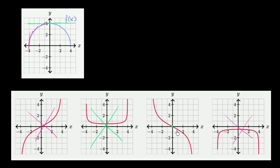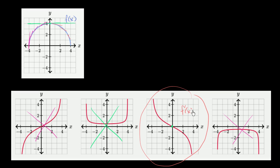The only candidate we have left is this one, and it does hit 0 when x equals 0. After that point, the slope should get more and more negative, essentially approaching negative infinity as x approaches 4. And we see that here — the value of this function is getting more and more negative, approaching negative infinity as x approaches 4. So we'll go with this one as a pretty good candidate for f prime of x.